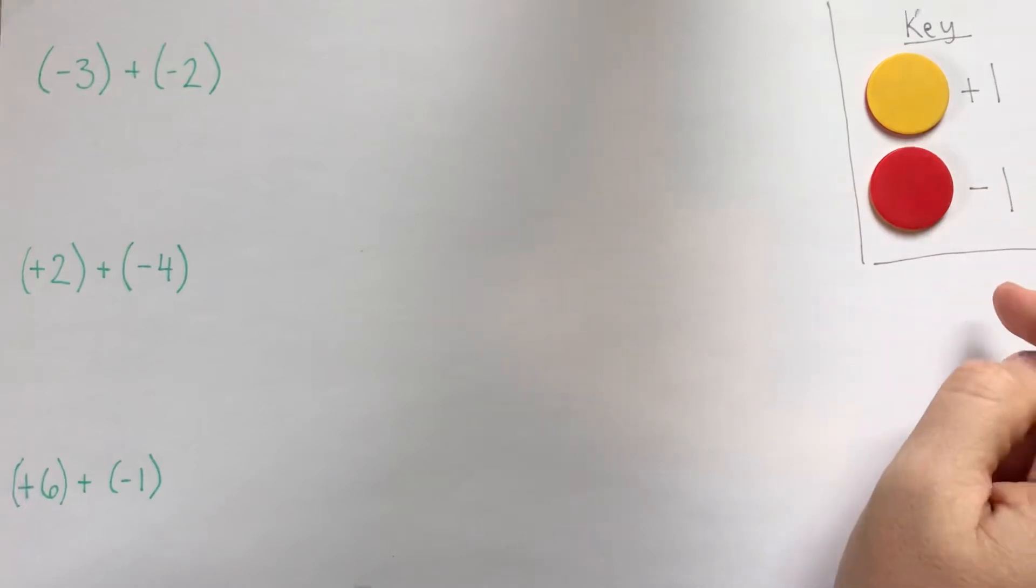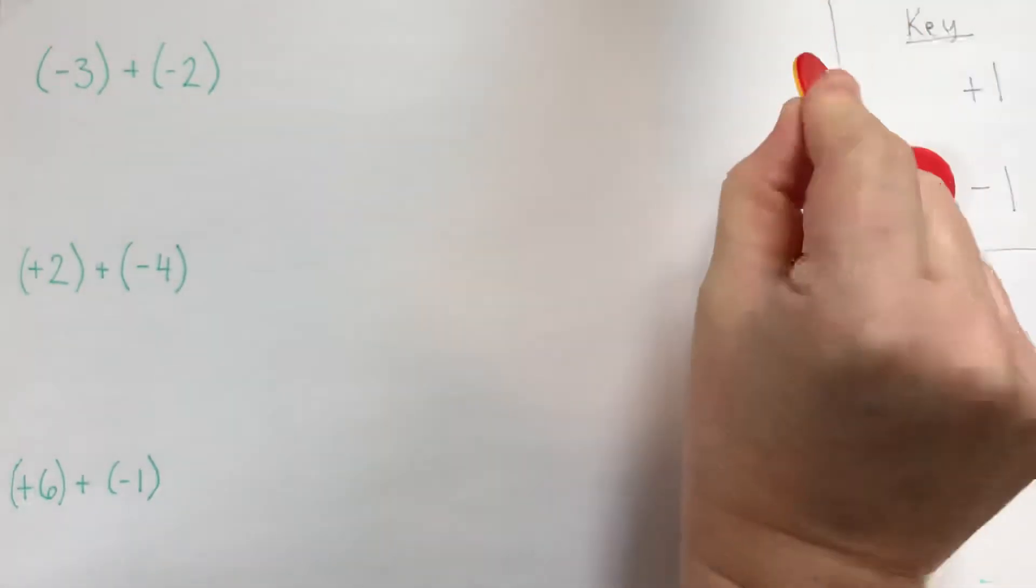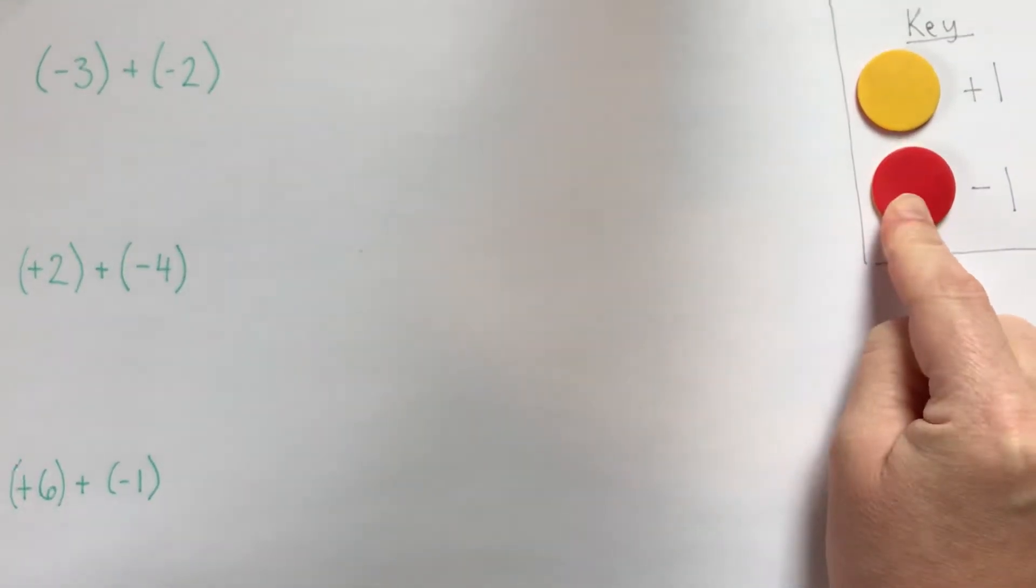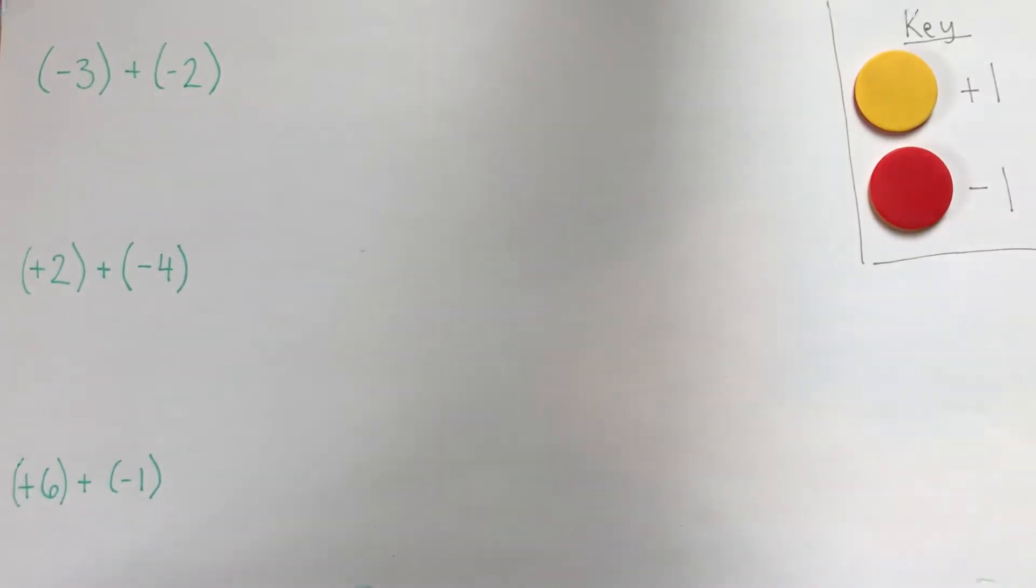My key that I've written over here, so we don't forget, is that positive one will be represented by yellow, and negative one will be represented by red. You might use opposite colors, or your counters might look different, which is totally fine.